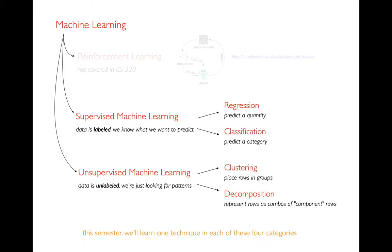I just want to review the main categories of machine learning. There are three main categories — some people will say four. There's reinforcement learning, which is about multiple stage decisions; we're not doing that in 320. We're really interested in supervised machine learning, where we're trying to make some sort of prediction about maybe the future or about some other unknown. And then there's unsupervised, where there's no particular thing we're trying to predict, but we're looking for some sort of patterns or simplicity within the data.